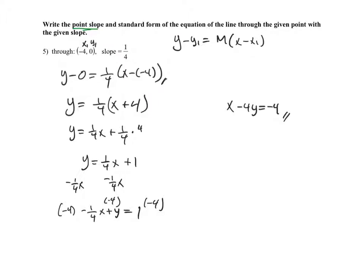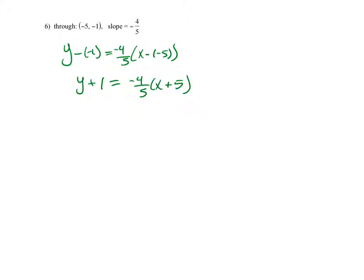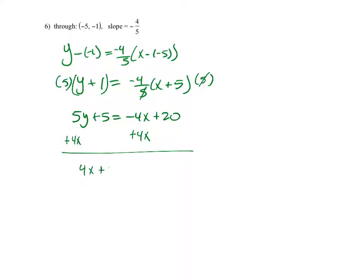For the next one: y minus negative 1 equals negative 4/5 times x minus negative 5, which simplifies to y plus 1 equals negative 4/5 times x plus 5. This is my point-slope form. To get standard form, I multiply both sides by 5: 5y plus 5 equals negative 4x plus 20. Adding 4x on both sides gives 4x plus 5y plus 5 equals 20. Subtracting 5 from both sides: 4x plus 5y equals 15. That's my standard form.